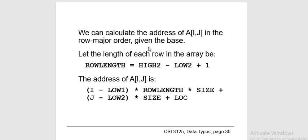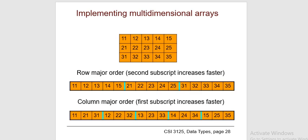The relation between arrays and pointers are closely tied to each other, such that we can use a pointer to perform all possible operations on an array. The array name is a constant pointer to the first element of the array, and the array decays to a pointer when passed to a function. In C, whenever we try to pass an array to a function, it decays to a pointer and then passes a pointer to the first element.